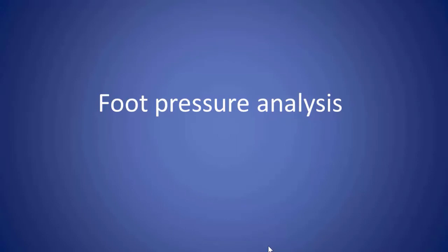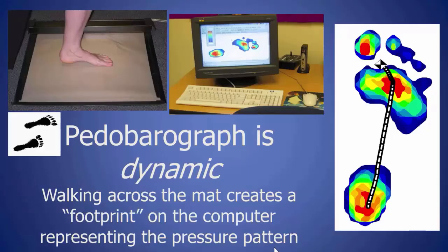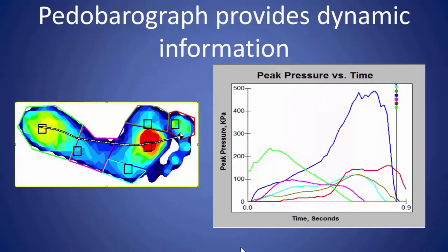We also get foot pressure analysis. This can be done simply by taking photos of the foot on a clear-topped box, where the plantar surface is reflected on a mirror underneath and a photo is taken — but this is just static, not dynamic. The pedobarograph — a proprietary term for one type of these devices — is dynamic. It records a full foot step during the stance phase, producing a printout of the foot with a line showing the center of pressure and how it progresses from the heel to the toe.